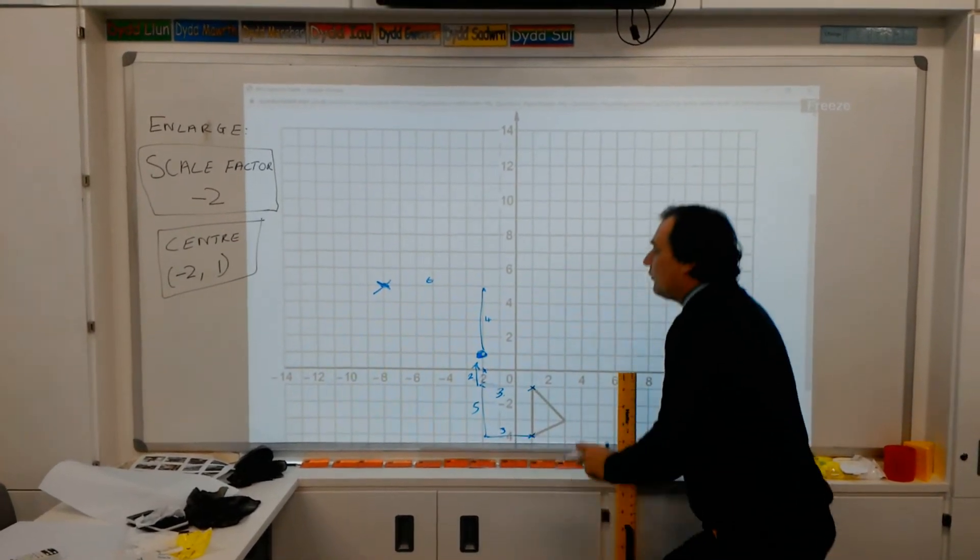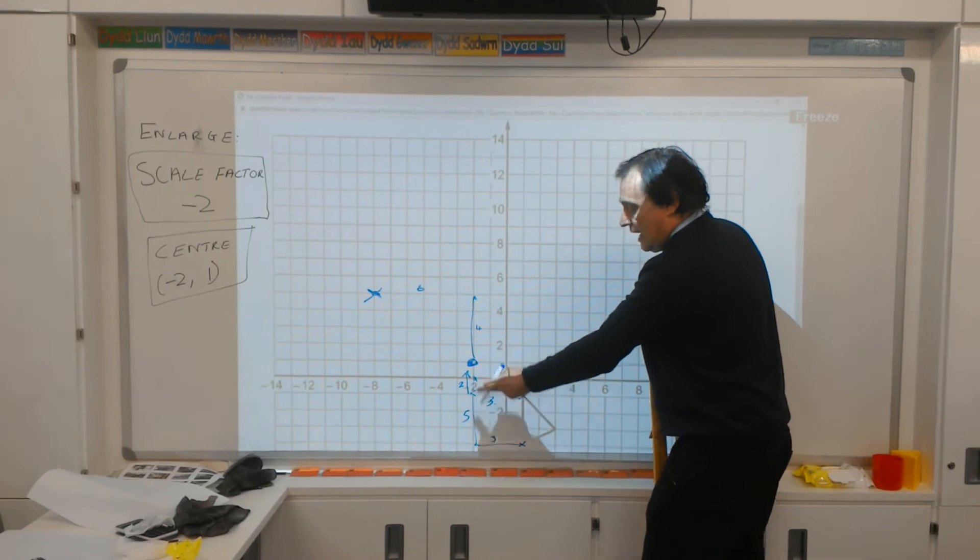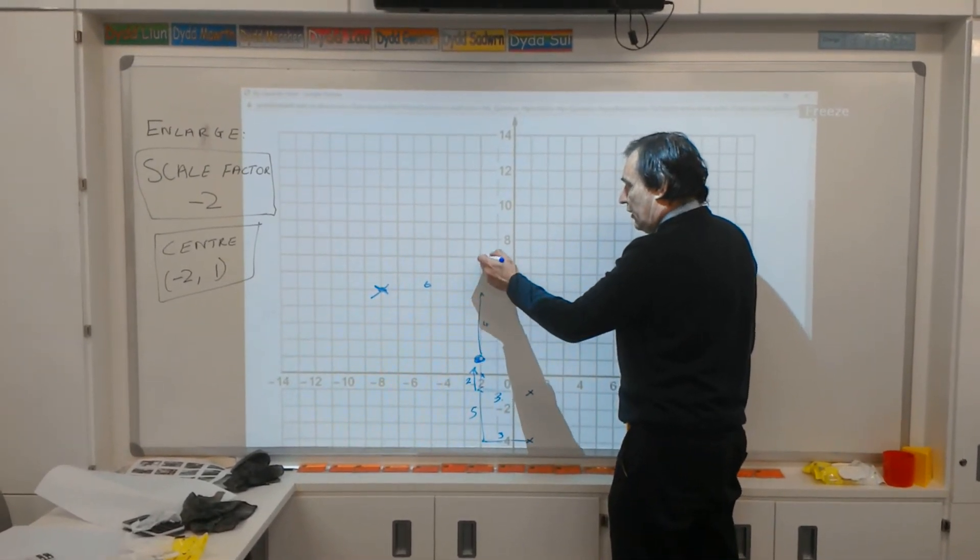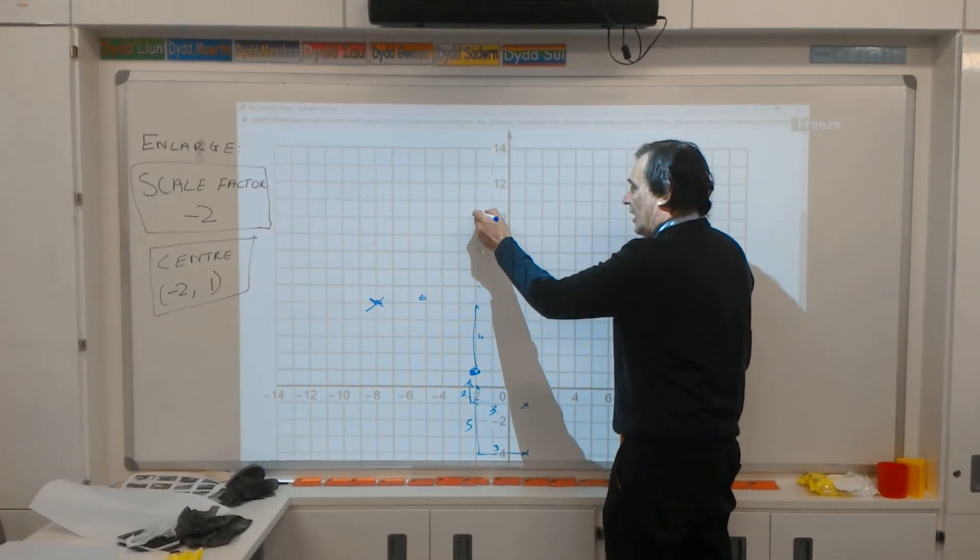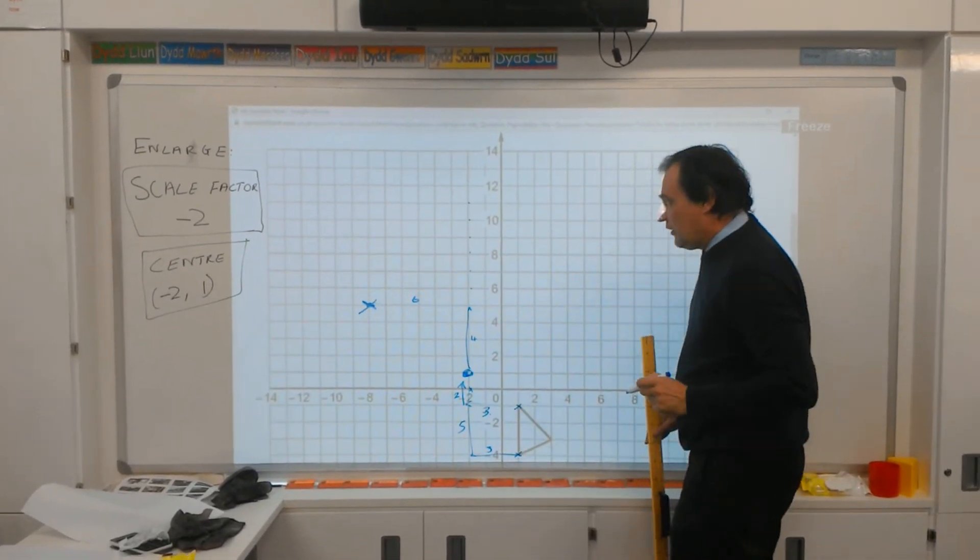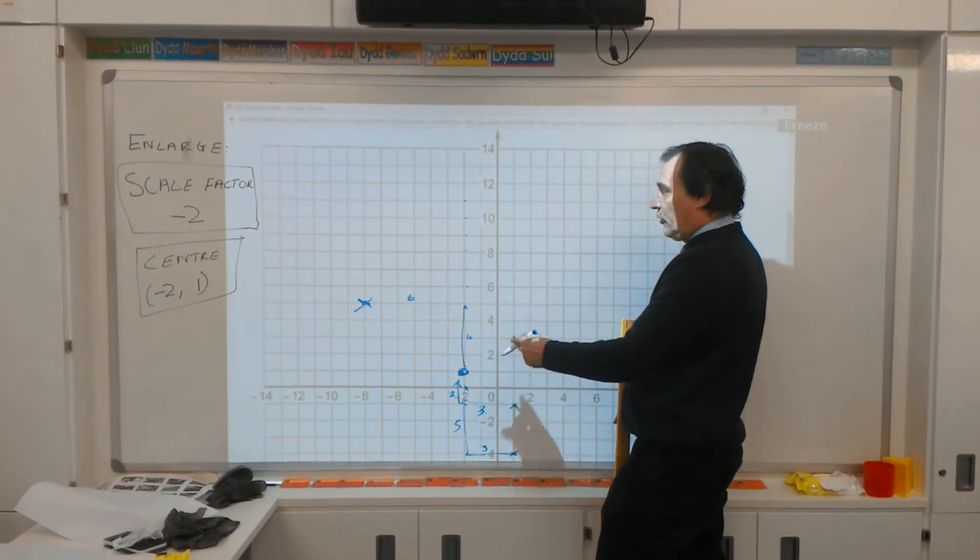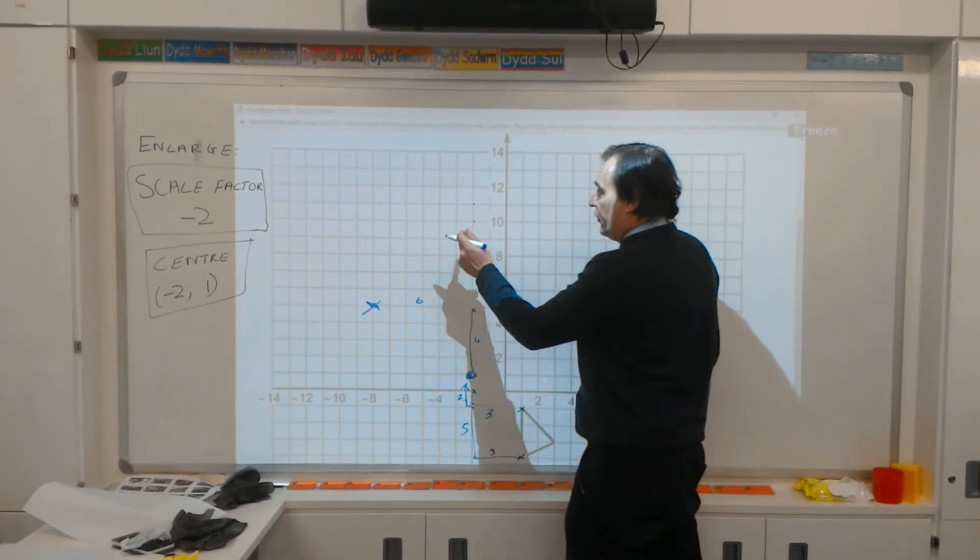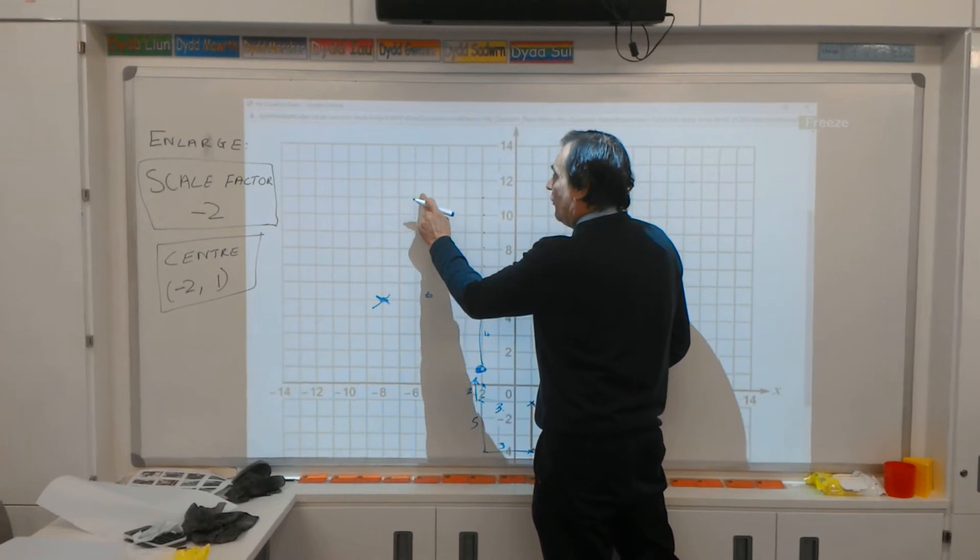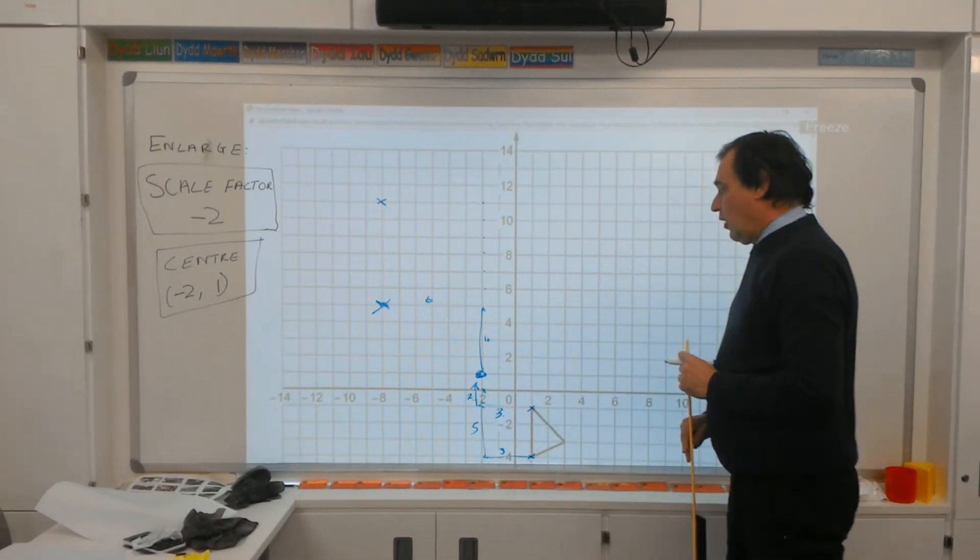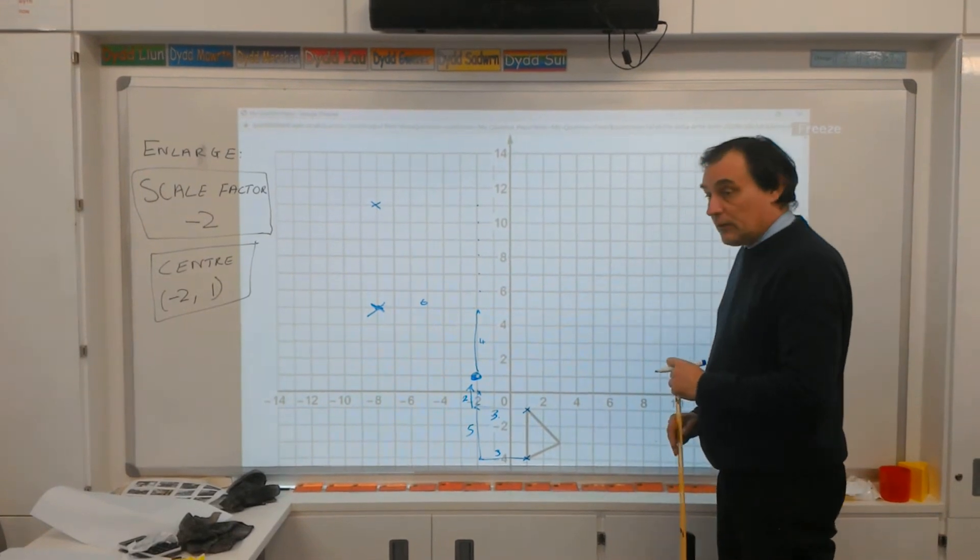So in other words, I've got to go up 10 now, because 2 times 5 is 10 on the minus 2. So 1, 2, 3, 4, 5, 6, 7, 8, 9, 10. And I've got to then go across 6, because I went across 3 going into the dot. So again, 1, 2, 3, 4, 5, 6, which leaves me with the cross here. So I've done 2 out of 3 on the side now.